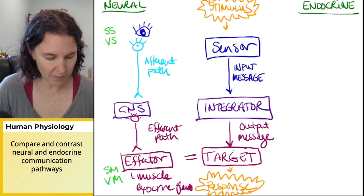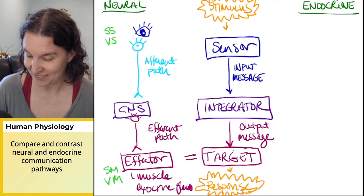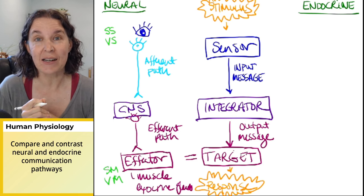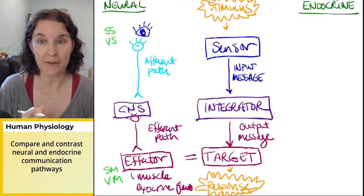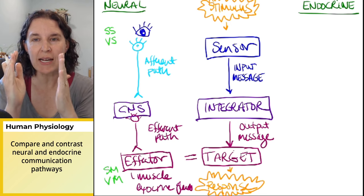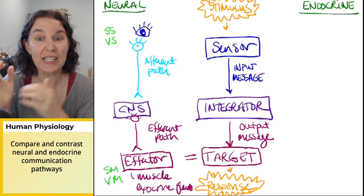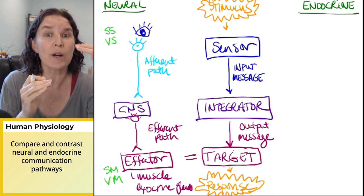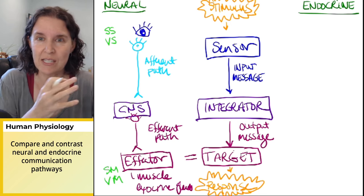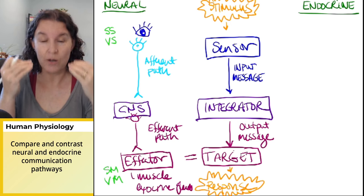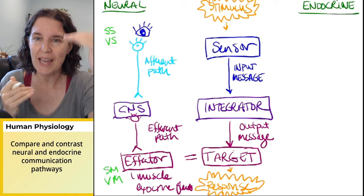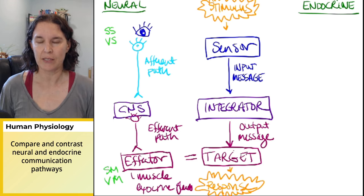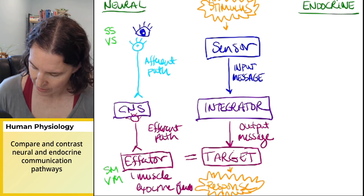Somatic motor neurons instruct skeletal muscle to do their thing. Visceral motor neurons instruct smooth muscle and cardiac muscle to do their thing. There is a pathway, friends. How do you feel? I'm so glad you're doing well. This is cool because now we're going to do the last pathway, the endocrine pathway. You can see them right next to each other. You can see that the effector is the target, the central nervous system is the integrator. We have sensory receptor organs or sensory receptors, cells that are really receiving information. The afferent path is the input message, the efferent path is the output message. It's all clean.